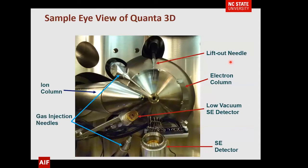If you looked up into the system, you would actually see all of the things just described: your electron column, your ion column, your gas injection needles, your lift-out needle, and detector. You can see they're all aimed at one point — this would be your eucentric point. Once you've aligned this, you have all of these capabilities at your disposal to operate on the sample.